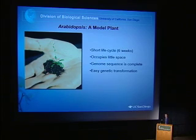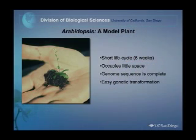Even labs that work on corn or rice use Arabidopsis as a rapid gene discovery tool. One of the reasons it was adopted as a model plant is that it has a very short life cycle — we can go from seed to seed in about six weeks. If we're working with corn, you might get two or three generations a year. And if you're working with a model tree species that only flowers after 10 or 20 years, you can imagine how long it might take to go 10 or 20 generations.